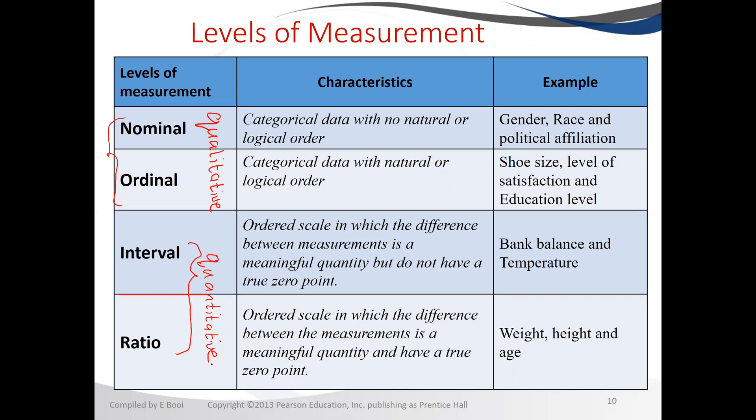Nominal variables are variables that you can put into categories because they come from categorical data, but there is no order — there are no levels, just categories. For example, today we're going to use retail as our example, looking at customers who come into our stores to buy clothes.